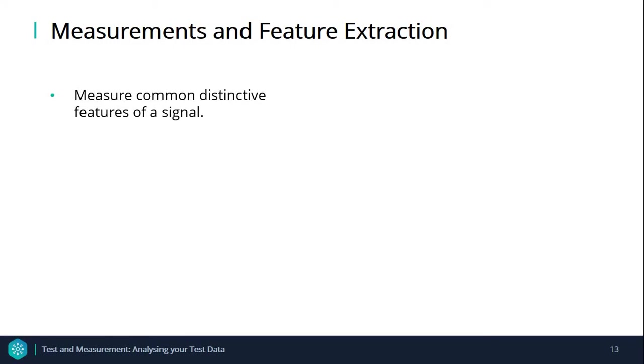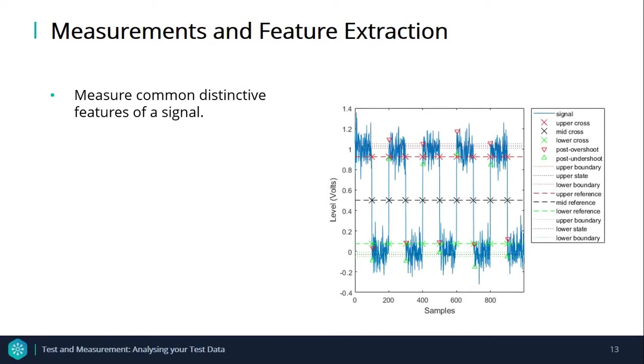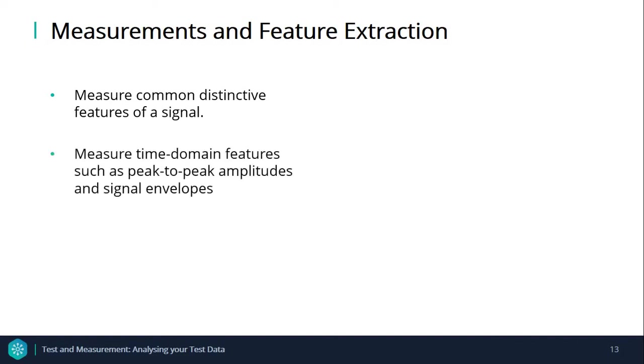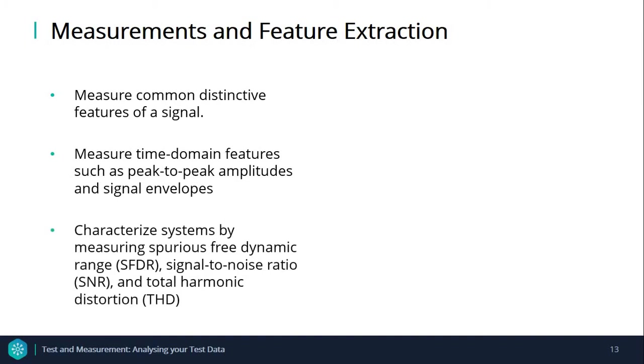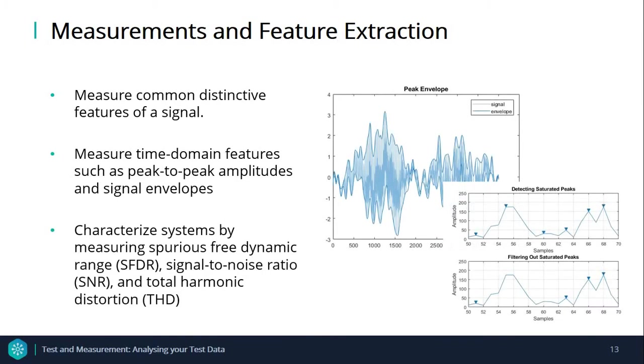There's a variety of different functions that let you measure common distinctive features of a signal. Key signal characteristics such as pulse and transition metrics which include rise time, fall time, settling time, pulse width, and duty cycle can also be identified. You can also determine the period of a signal by measuring the distance between the peaks and extract the signal envelope using the analytic signal.